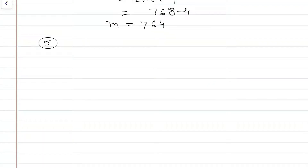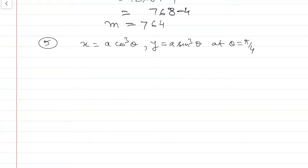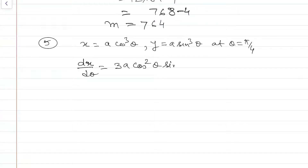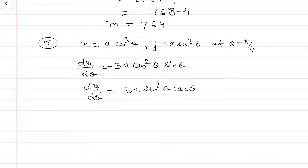Question number 5: Find the slope of the normal to the curve x = a·cos³θ, y = a·sin³θ at θ = π/4. The equation of the curve is in parametric form, so we find dx/dθ = -3a·cos²θ·sinθ. Then dy/dθ = 3a·sin²θ·cosθ. We apply the chain rule here.